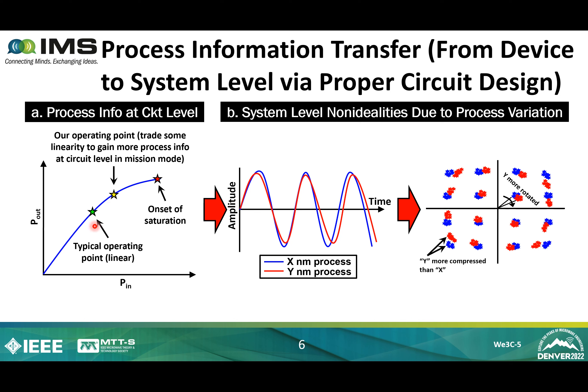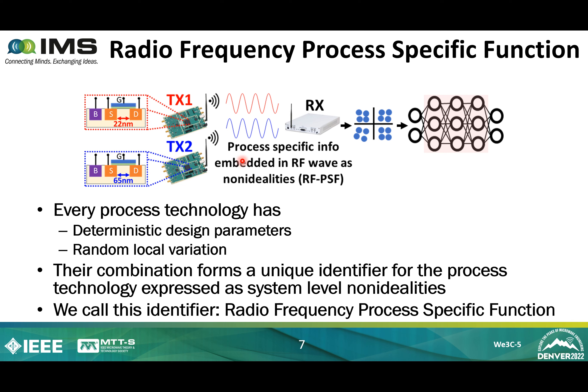So basically, we can operate the circuit in two modes: mission mode, which is detecting the process information during normal operation, and testing mode, where we push the power amplifier output all the way to saturation to get the maximum process information. Figure B shows system-level non-idealities due to process variation, visible both in the transmitted RF wave and the baseband constellation. Red and blue show y and x nanometer processes respectively. With that, we build the idea of a Radio Frequency Process Specific Function, or RFPSF. Here we have two identical transmitters manufactured in different processes, and their process information is embedded in the transmitted wave as system-level non-idealities.